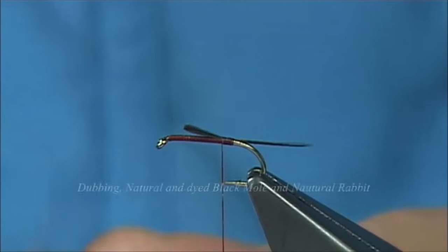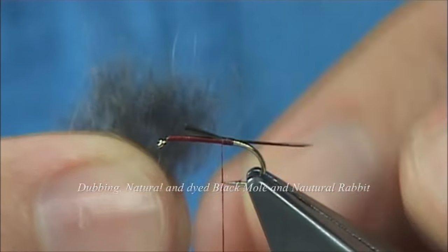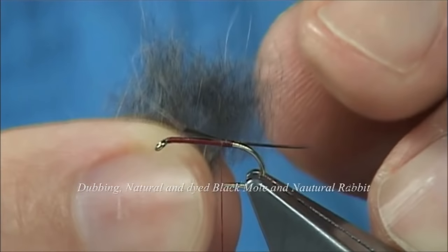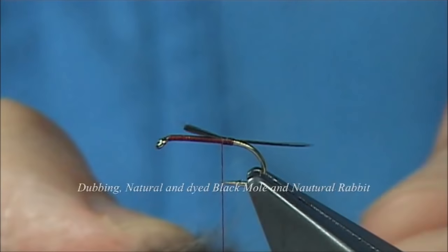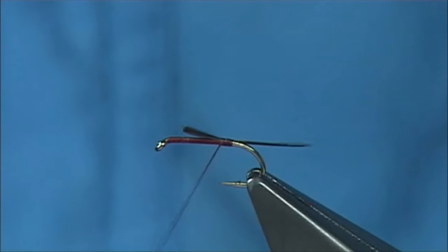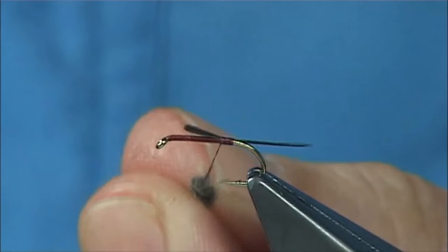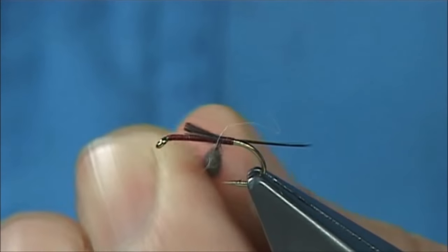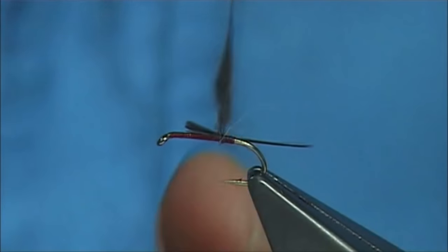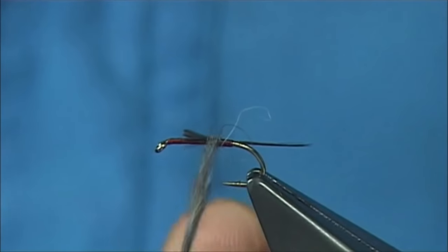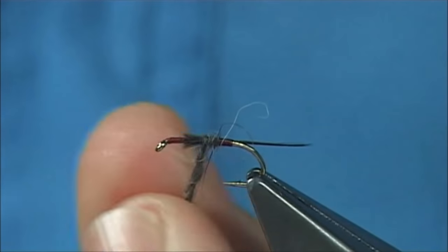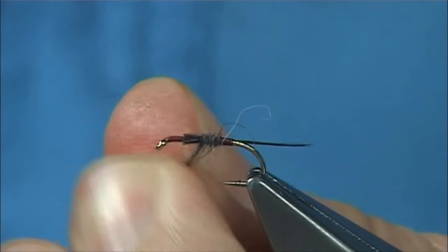Now the body itself is mole but I've mixed some dye black mole as well as natural mole and a wee bit of rabbit. This is a good blend, it's always done well for me and then we just slightly, I just basically put it on, stick it up to the hook, do a turn to get it started, that's the anchor point at the hook and then we just feed it on.